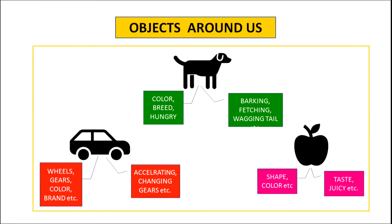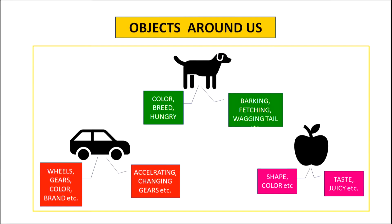For example, if you simply look around your cell, you will find objects like table, chair, pen, car, fan, phone, etc. All these objects have certain attributes and behaviour, where attributes are the characteristics of the object and behaviours are the functions which the object can perform. For example, the attributes of dog can be colour, breed, hungry, etc., and its behaviour can be barking, fetching, wagging tail, etc.